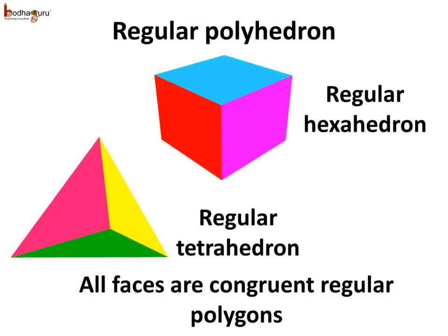This cube is also called a regular hexahedron as it has six equal faces. Same way, this triangular pyramid is called a regular tetrahedron as it has four equal faces.